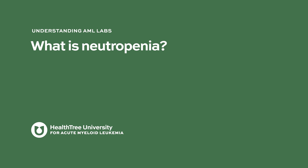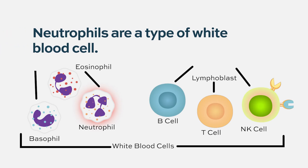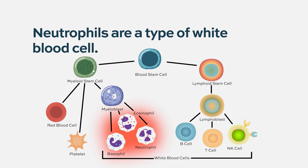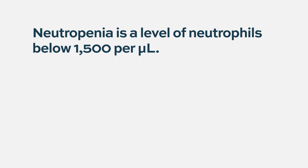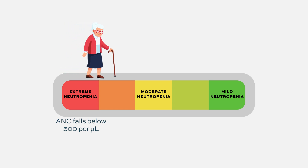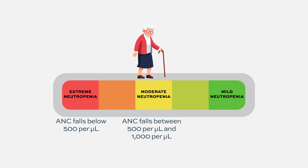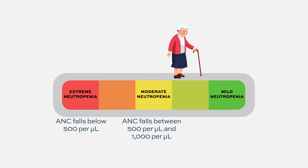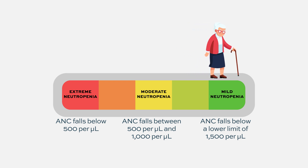What is neutropenia? Neutropenia is a low level of neutrophils, which are a type of white blood cell. AML is a disorder of white blood cells within the myeloid lineage — the way we produce white blood cells in our bone marrow. Neutropenia is considered a level below 1500 cells per microliter. There is a range: you can have extreme, moderate, or mild neutropenia.